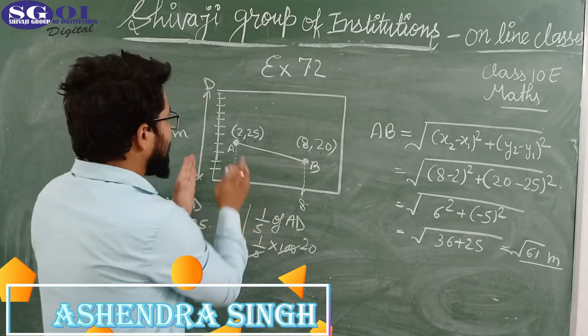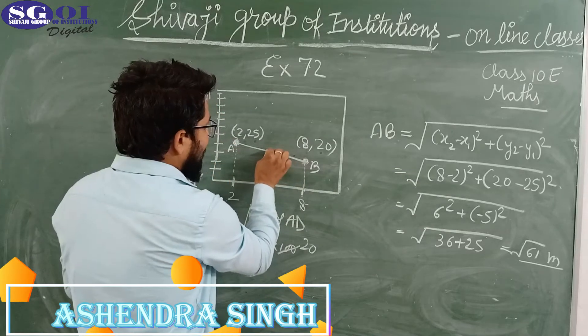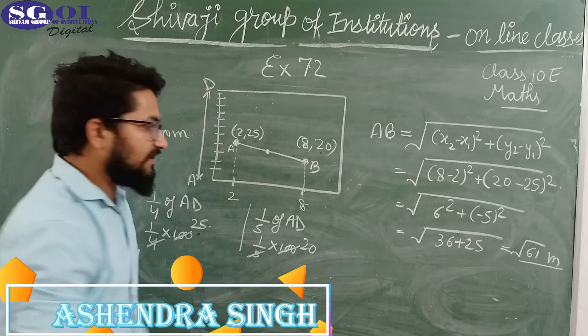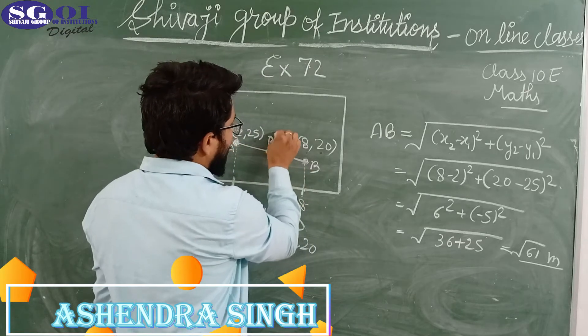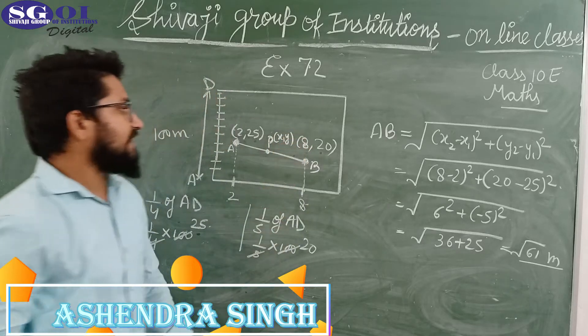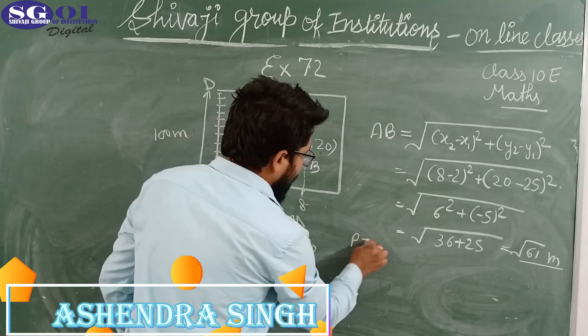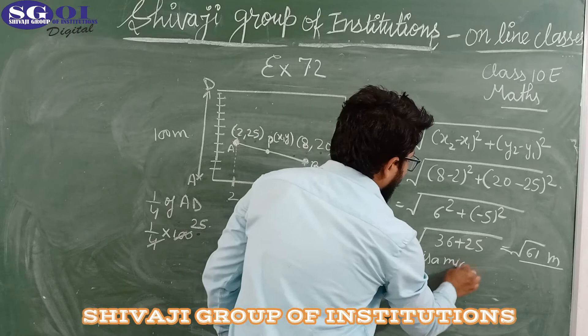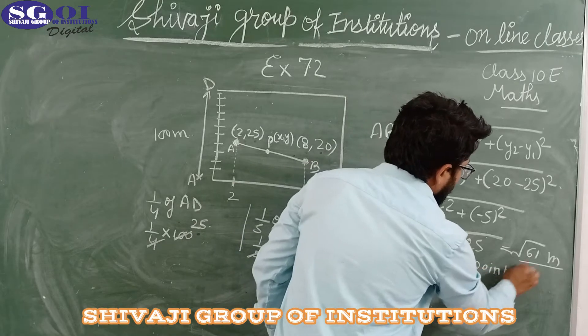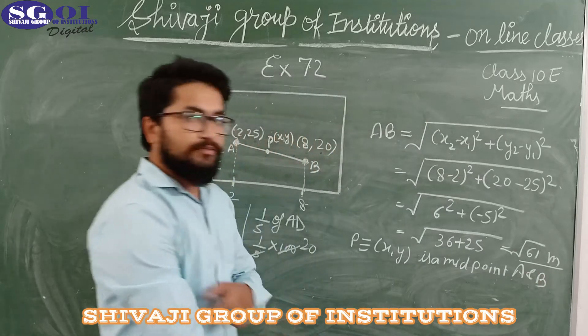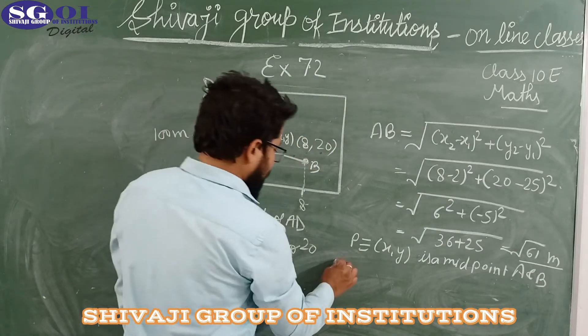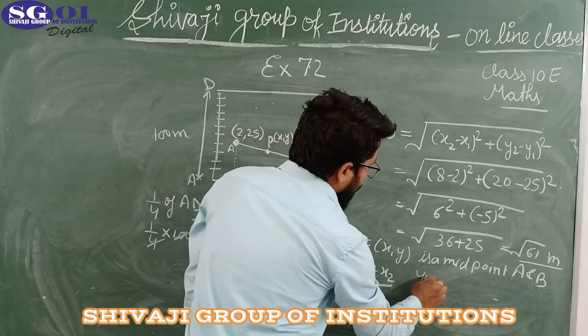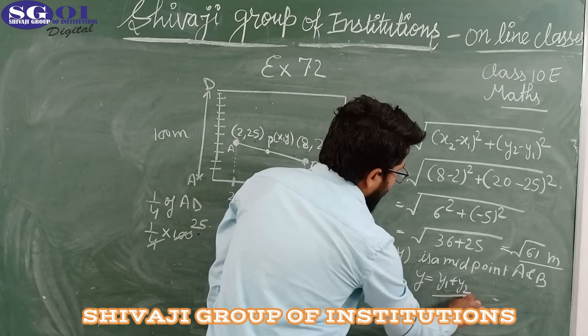The next question says that exactly between these flags there is one flag. We have to find the coordinates of that point. For that we have to use the midpoint formula: x will be equal to (x1 + x2) by 2 and y will be equal to (y1 + y2) by 2.